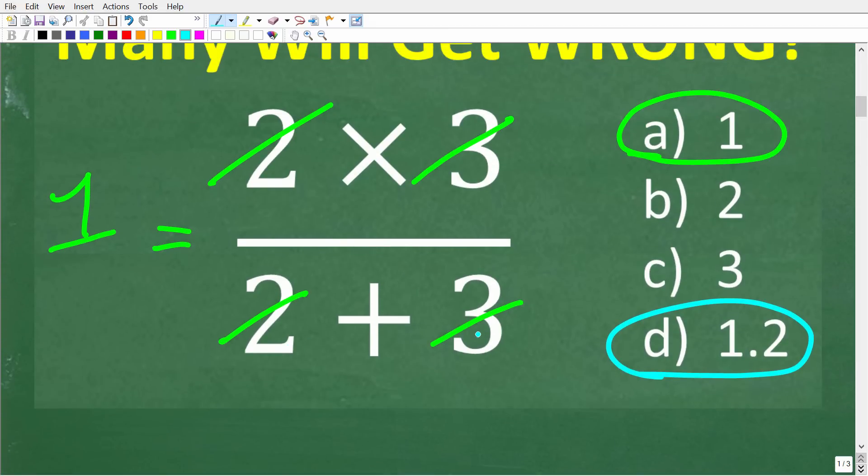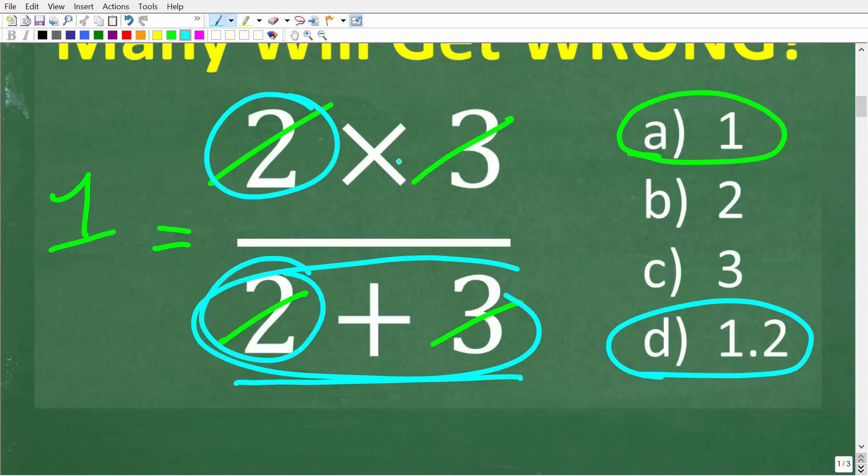Okay so if you understand that you can see why this is wrong because this 2 and 3 down here the way it's written this is a sum. It's not multiplication so these are not factors so you cannot cross cancel these numbers. Let's take a look at some more examples.